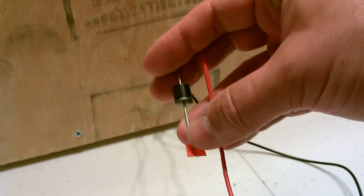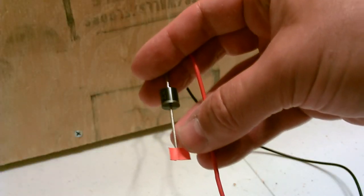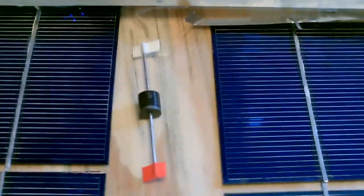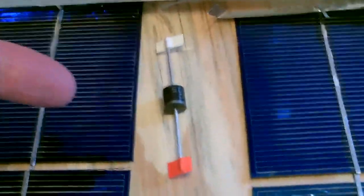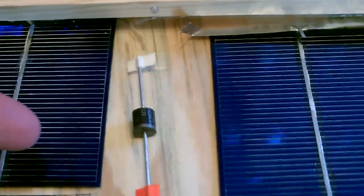Blocking diode goes like that by the way, in the positive line. Real simple to put that in. And by the way if you can't get one, not a big deal on the smaller panels. But if you can get it, it's good to use.